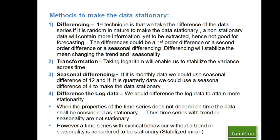If your data is not stationary even after differencing, there are a few other techniques we can use. The second is transformation. This technique is used when the variance is not stabilized — meaning you see seasonality, but the magnitude of that seasonality keeps increasing or decreasing as you move through your time series. That means it's a multiplicative effect, and variance is not constant across all the seasonal periods.